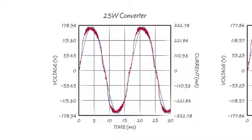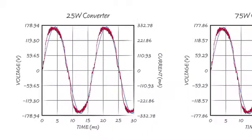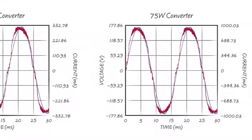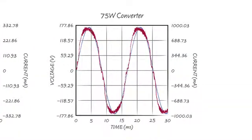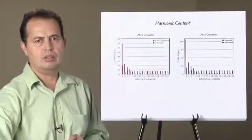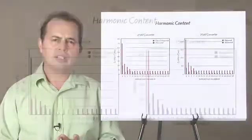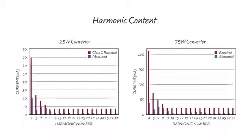The LT3798 modulates the peak switch current with a scaled version of the input voltage. This technique provides excellent power factor. A low bandwidth feedback loop keeps the output voltage or current regulated without distorting the input current. Harmonic distortion as well as power factor are excellent, whether at low or high power levels.